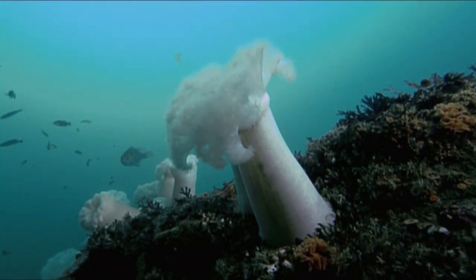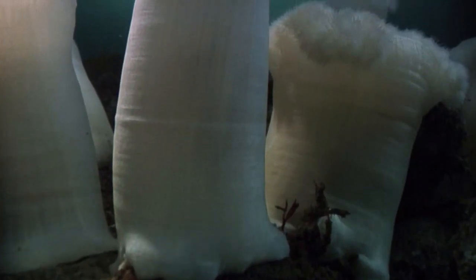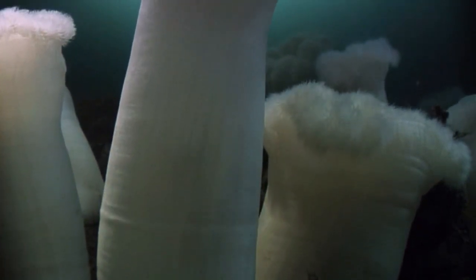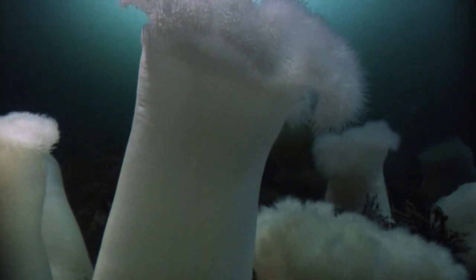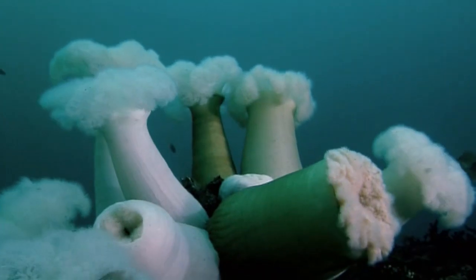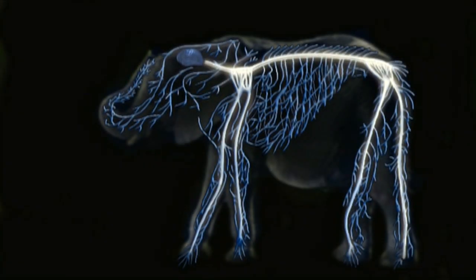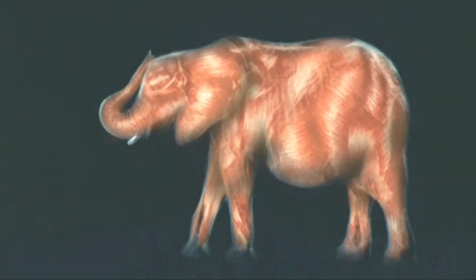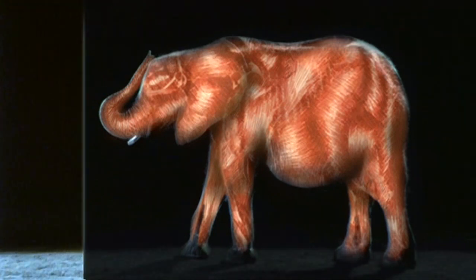It looks so simple, but all creatures that crawl, soar, or swim today rely on muscle and nerve. They're ancient inheritance from cnidarians. This exquisite system, first perfected by cnidarians, would be passed on throughout the animal kingdom.